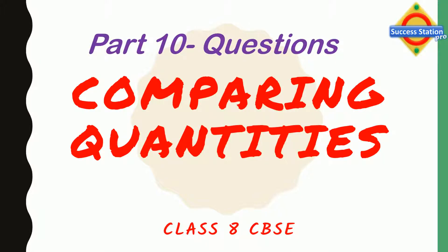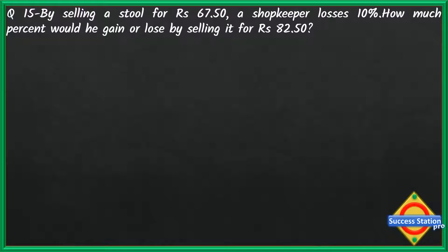Hello friends, welcome to Success Station Pro. This is the 10th part of the chapter on comparing quantities. Let's get started. The question says: by selling a stool for rupees 67.50, a shopkeeper loses 10%.